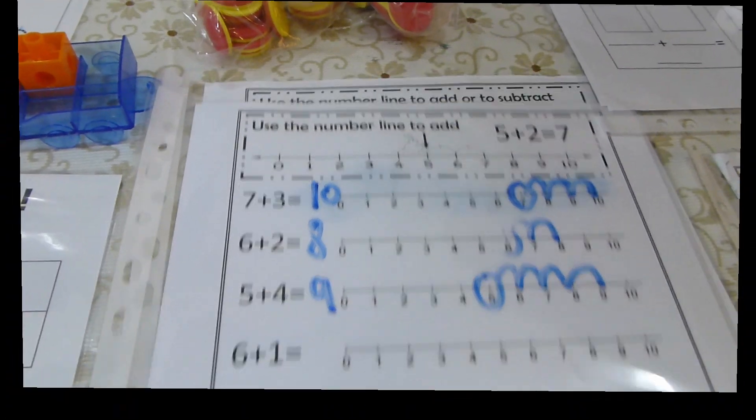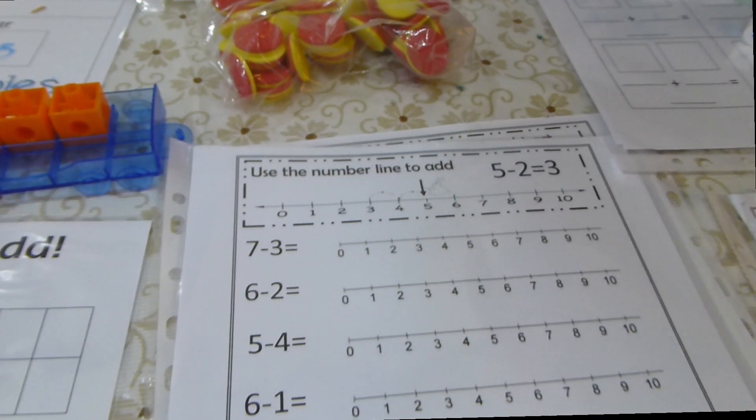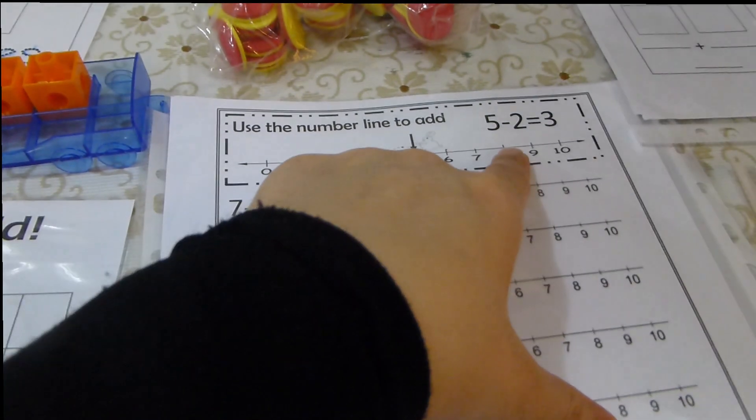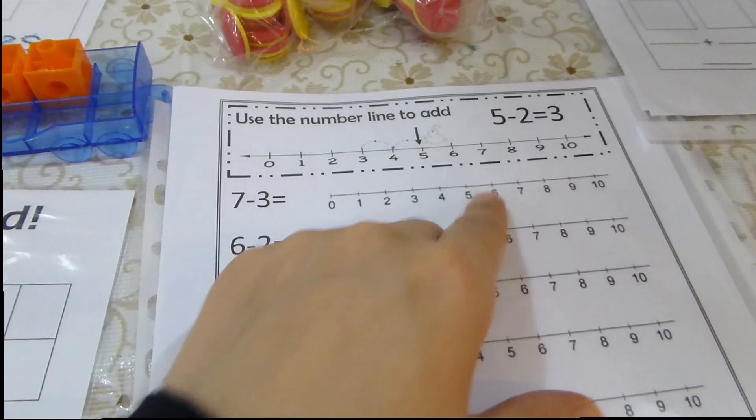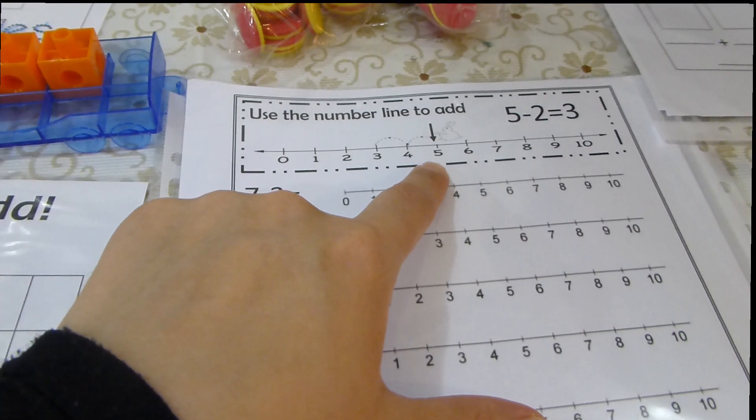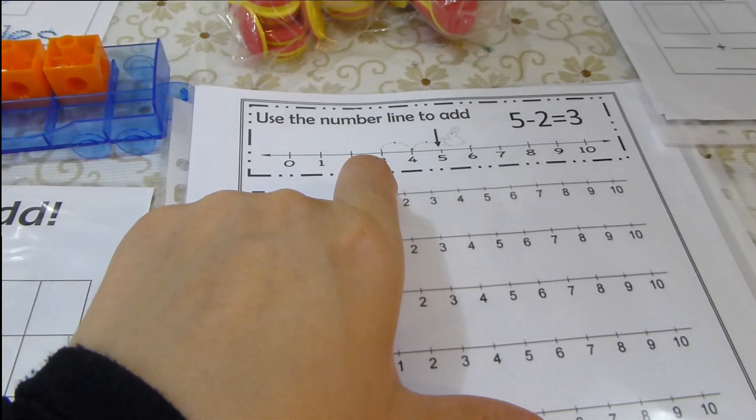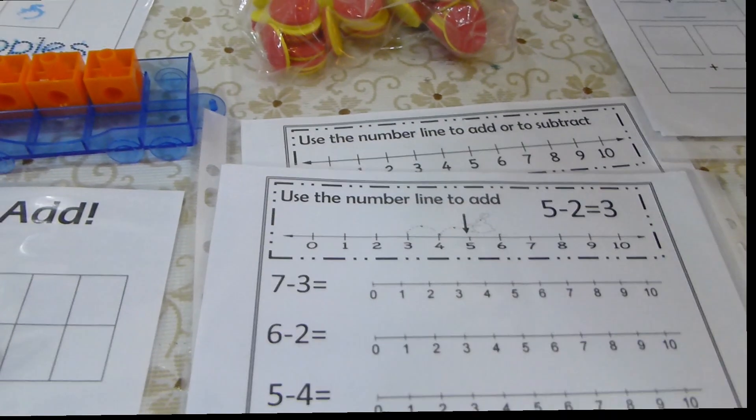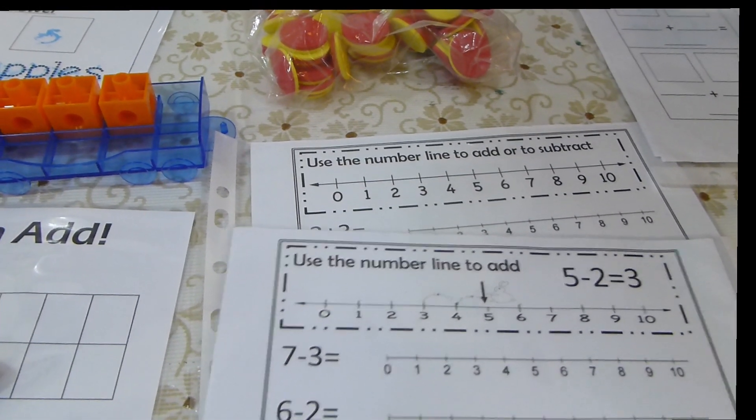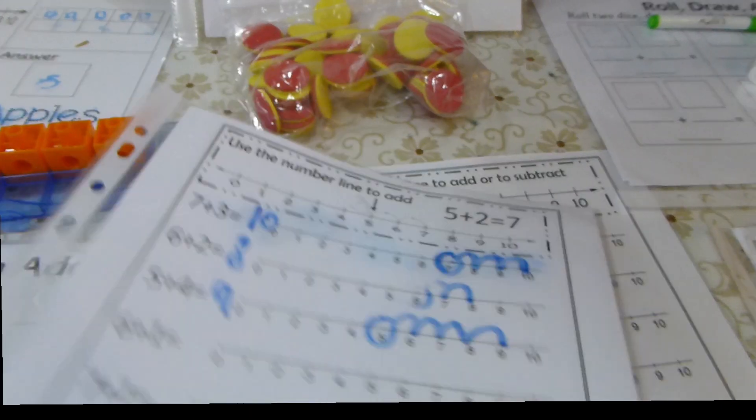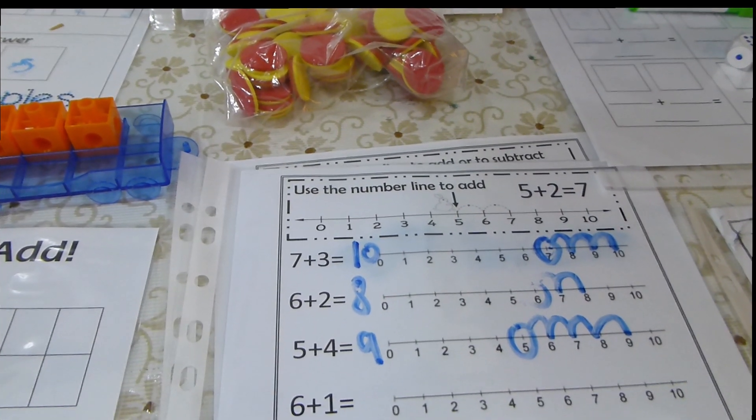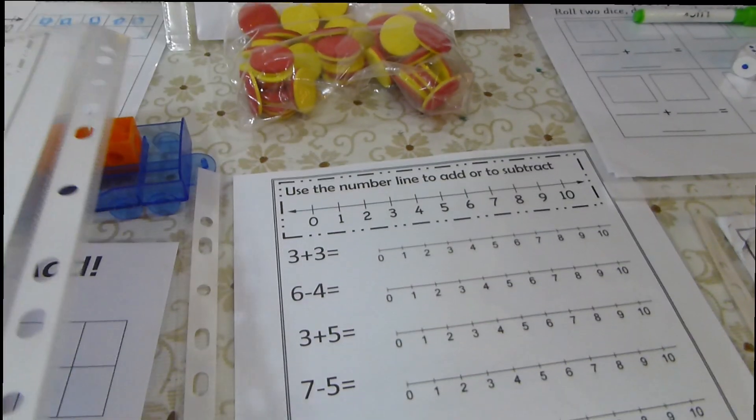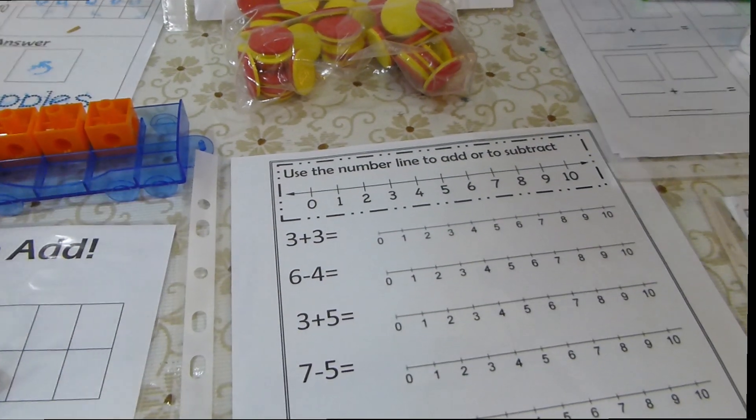For the subtraction, this is different. He will hop backward. Let's take the first example here. 5 minus 2. The child will circle number 5 and then he will try to move backward 2 times to get the number. So this is 5 minus 2 equals 3. In this document, you will find one paper for addition, one paper for subtraction, and the other one is mixed equations.